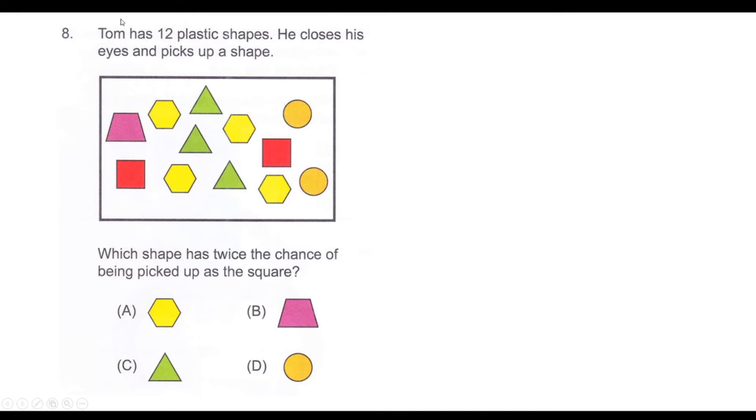Next question: Tom has 12 plastic shapes. He closes his eyes and picks up a shape. Which shape has twice the chance of being picked up as the square? First, we find how many squares are available - there are 2 squares. We need to find which shape appears twice the times as the square, so 2 times 2 is 4. It's the hexagon which appears 4 times. Hence, our answer is option A.